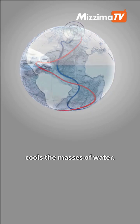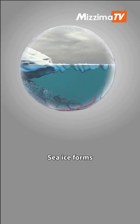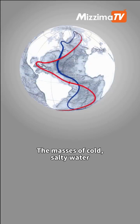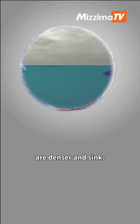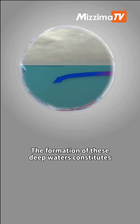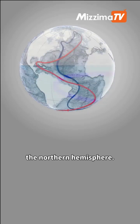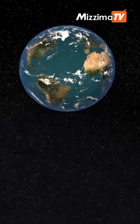This process gradually cools the masses of water. Sea ice forms, releasing salt into the ocean. The masses of cold, salty water are denser and sink. The formation of these deep waters constitutes the major carbon sink in the northern hemisphere. Then the waters return towards the South Atlantic and the Southern Ocean.